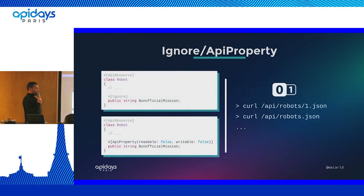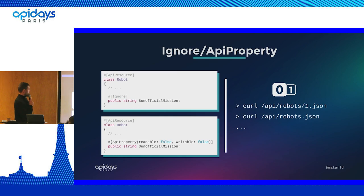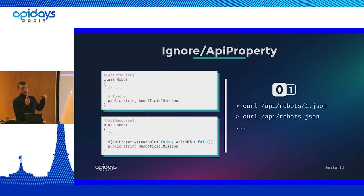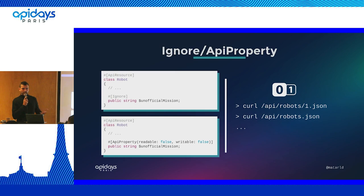We've seen two simple and straightforward ways to expose a property. But that's kind of binary - it doesn't depend on any context. Whatever the request, whatever the robot version, as it's strictly configuration, the property will either be ignored or exposed. But it happens sometimes that we want to expose some data in one context and other data in another context, and with these approaches it's just not possible.